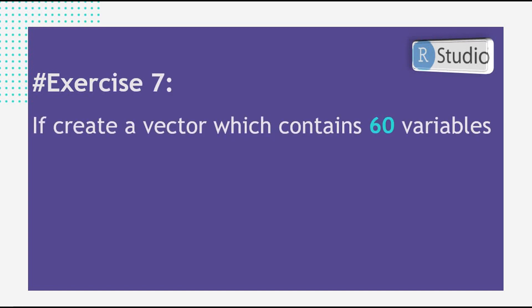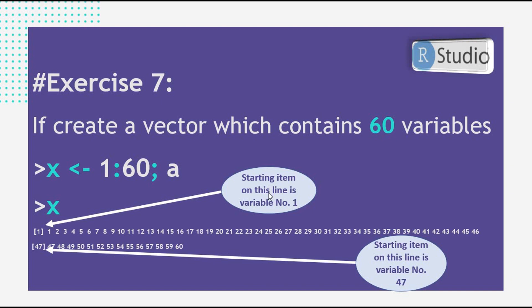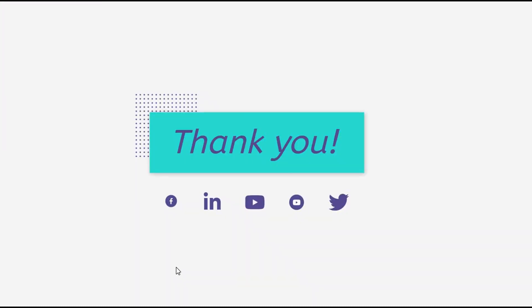Here is an example to explain it further. We create a vector from 1 to 60 by writing 1:60 with a semicolon a to print it immediately. In the output, we see [1] meaning the starting item on that line is variable number 1, and [47] meaning the starting item on that second line is variable number 47. It simply indicates the index of the first element shown on each line.